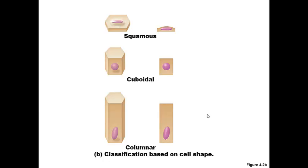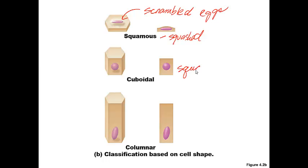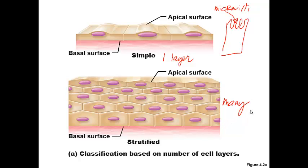The other classification we use for epithelium is the shape of the cell. Squamous cells look like they are squashed — from the top under a microscope they almost look like scrambled eggs or lily pads. There are also cuboidal cells that are square shaped. There can also be column-shaped ones. Their shape is very important for their function. Simple epithelial — only one layer thick — is found where absorption, secretion, and filtration need to occur.